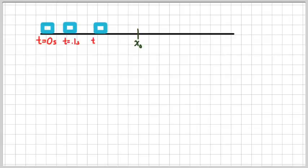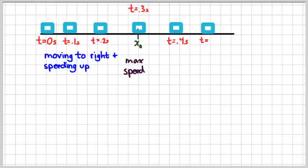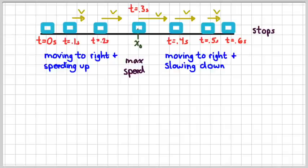Kind of redrawing my picture here. Again, this is where we're moving to the right and speeding up. Get to maximum speed. Continue to move to the right, but slow down. And then eventually we stop. If I draw on the velocity arrows, my velocity arrows will look something like this. At t equals 0.1 second, it's kind of going to the right slowly. It speeds up, reaches a maximum velocity at 0.3 seconds, and then continues to move to the right, but slows down.